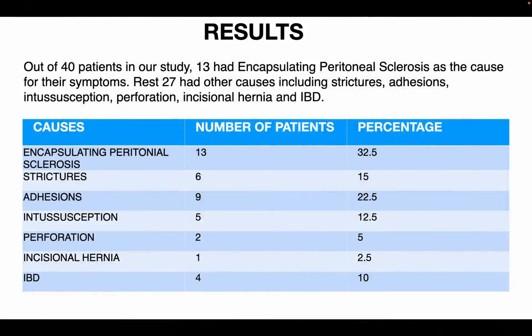Out of 40 patients in the study, 13 had encapsulating peritoneal sclerosis as the cause for their symptoms. The remaining 27 had other causes including strictures, adhesions, intussusception, perforation, incisional hernia, and IBD.